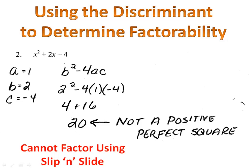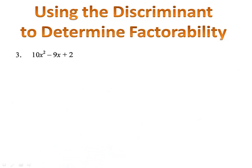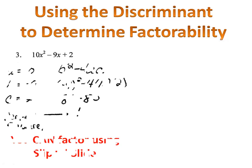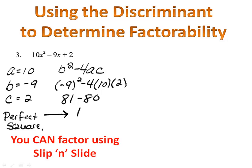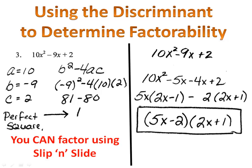Let's try example 3 — the expression 10x squared minus 9x plus 2. The numbers aren't very large; you could probably just go right ahead and find the factors, but let's test it. Use the discriminant — please pause the video here and come back when you're finished. a is 10, b is negative 9, c is 2. We plug those in and get the number 1. 1 is a positive perfect square, so we can use slip and slide. In fact, the factors are 5x minus 2 and 2x plus 1.